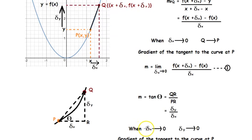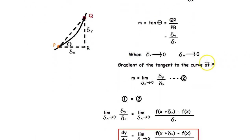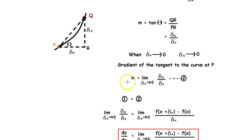So tan θ equals delta y divided by delta x. When delta x tends to 0, delta y also tends to 0. The gradient of the tangent to the curve at point P can therefore be given as the limit of delta y / delta x as delta x tends to 0 — let's call this equation 2.